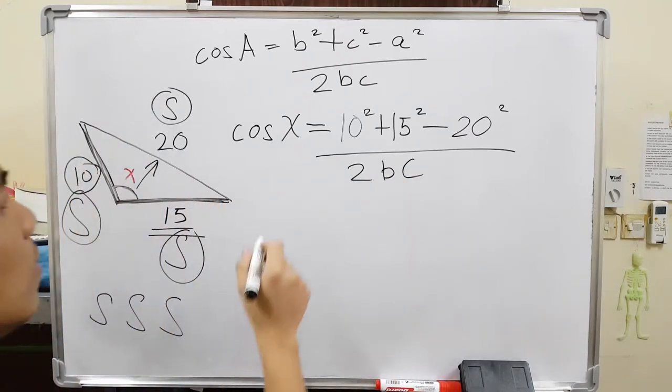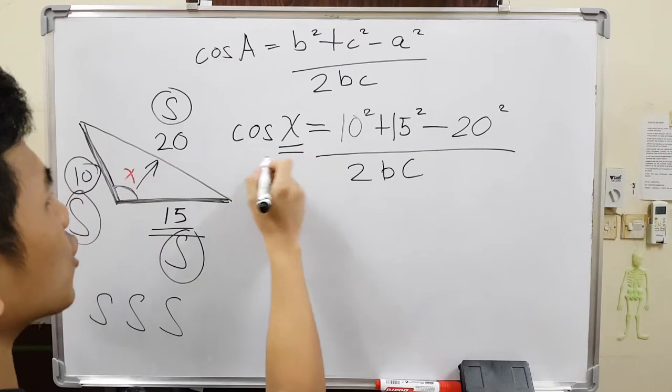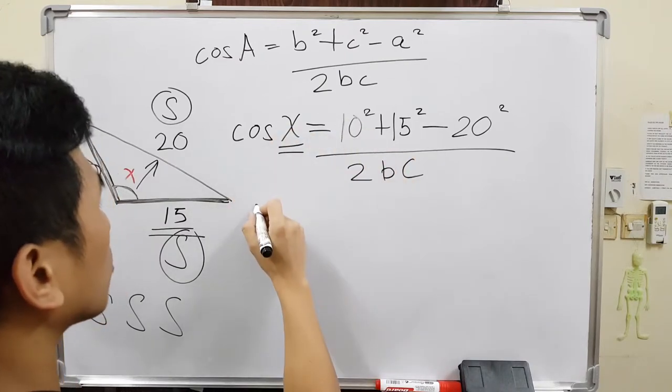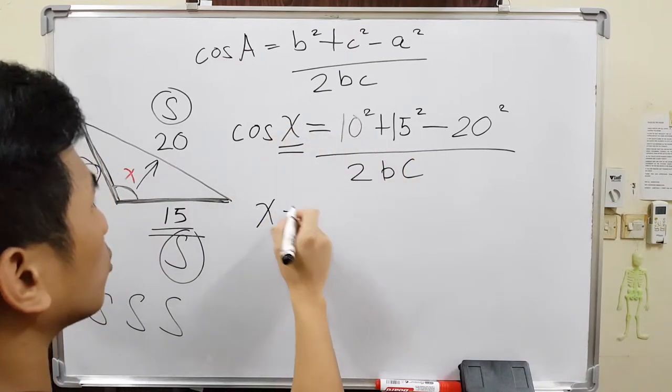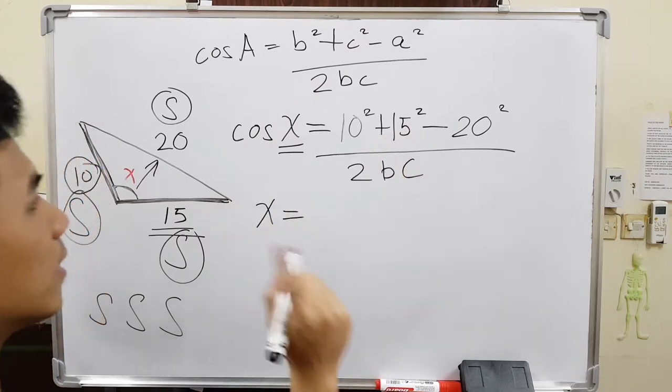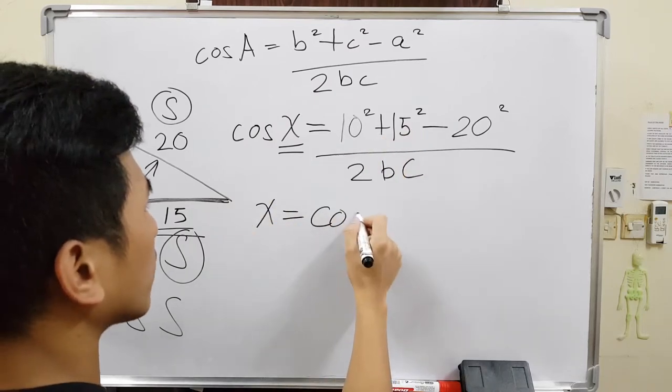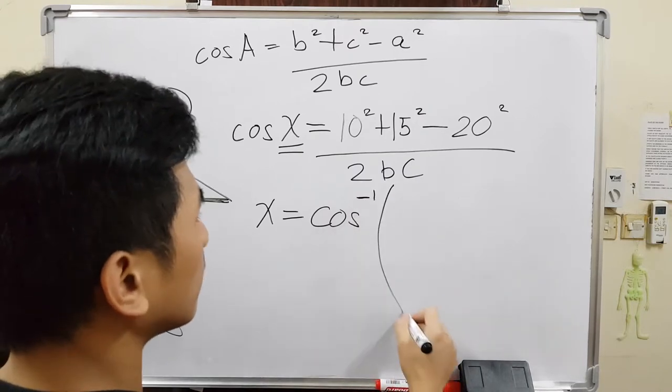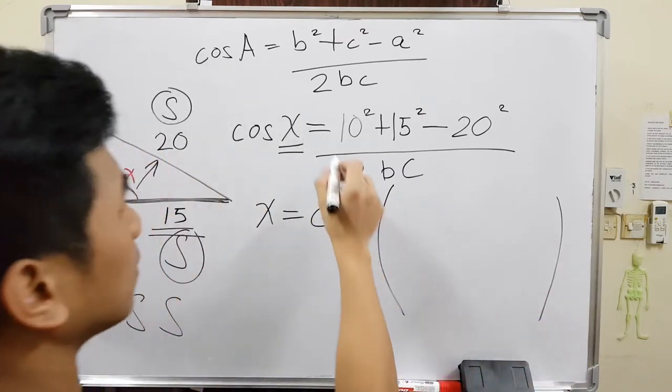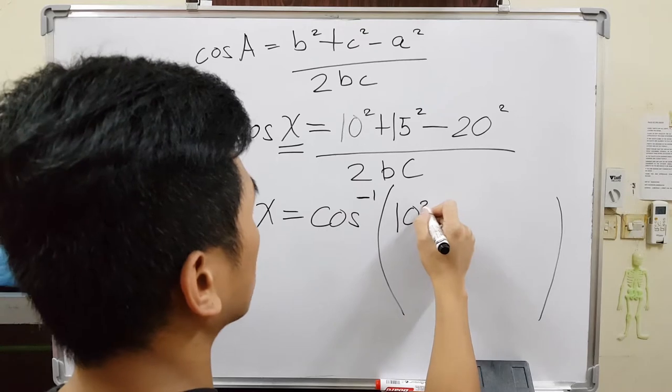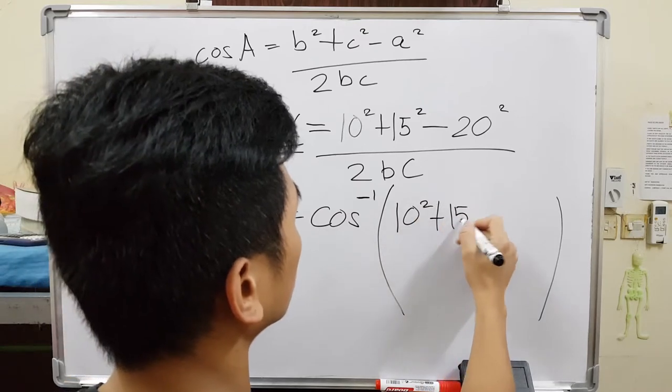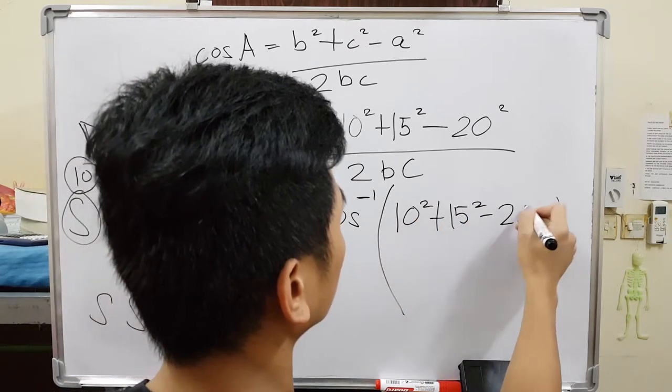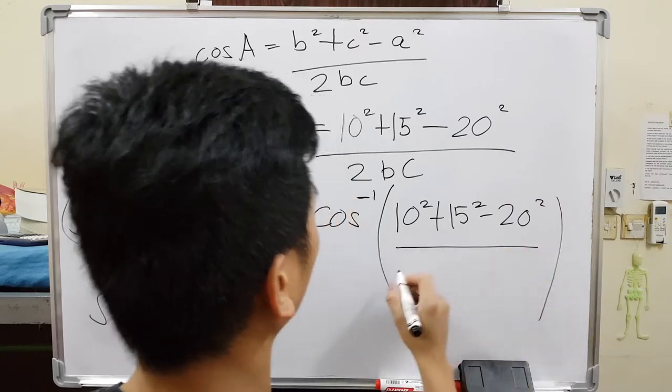All over 2BC. And then, since I need the angle here, I shall move cosine to the other side. So x is equivalent to when you move cosine to the other side, just like the sine, you will use the cosine inverse. Cosine inverse. And then copy everything that we have on the right side.